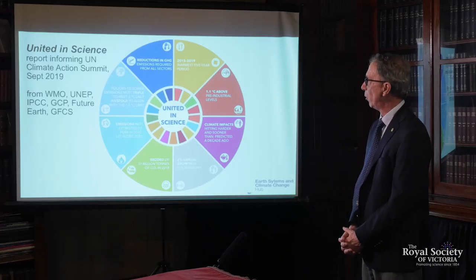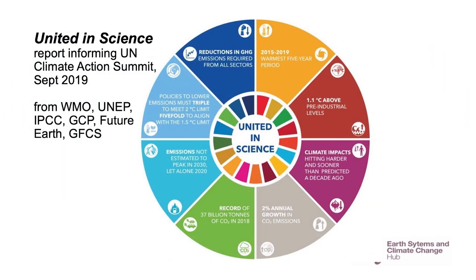This is a summary graphic. 2015 to 2019 was the warmest five-year period, 1.1 degrees above pre-industrial temperatures. The climate impacts are hitting sooner and harder. Unfortunately, despite commitments to limit global warming, we've had 2% annual growth in carbon dioxide emissions from fossil fuels over the last 10 years. We had record high emissions in 2019, and emissions are not expected to peak until 2030.